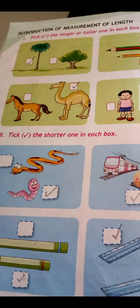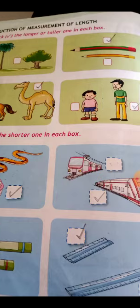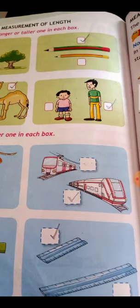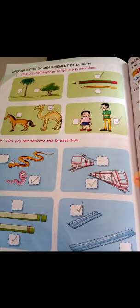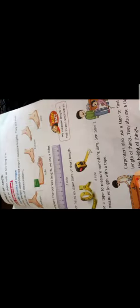Two pictures are given, one snake and one snail. Tick the snail picture. Next, two metro train pictures are given. The second picture, put a tick. Next, two crayons pictures are given. The small one, second one, tick that. Next picture, two scales are given. The small scale, tick the shorter one.